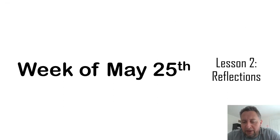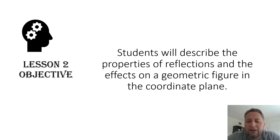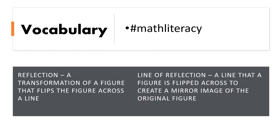For the week of May 25th, our second lesson is on reflections. Students will describe the properties of reflections and the effects on a geometric figure in the coordinate plane. A reflection is a transformation that flips the figure across a line. That line is called the line of reflection — a line that a figure is flipped across to create a mirror image of the original figure.